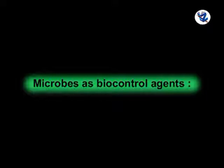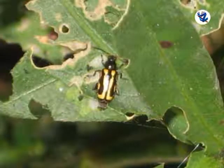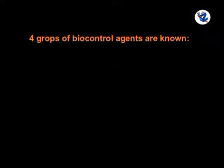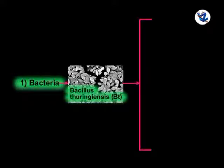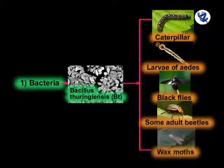Microbes as biocontrol agents: biological agents (organisms) used to kill or check the proliferation of disease-causing agents are called biopesticides. The use of microorganisms or biological methods for controlling plant diseases and pests is called biocontrol. Four groups of biocontrol agents are known: bacteria, fungi, protozoans, and viruses. In bacteria, Bacillus thuringiensis (Bt) has a host range including caterpillars, larvae of Aedes, black flies, some adult beetles, and wax moth.